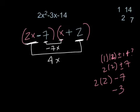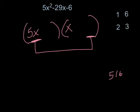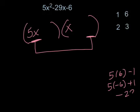The next one is 5x squared minus 29x minus 6. Again, I'm going to start with two sets of parentheses — 5x and x. We want to produce negative 29 when whatever number I'm putting in this set of parentheses is multiplied by 5. When I look at the factors of 6 — 1 and 6, and 2 and 3 — I think: 5 times 6 minus 1 is positive 29. If I did 5 times negative 6 plus 1, I would definitely get the negative 29 that I want.